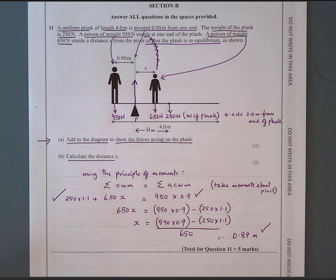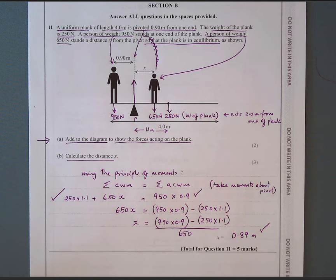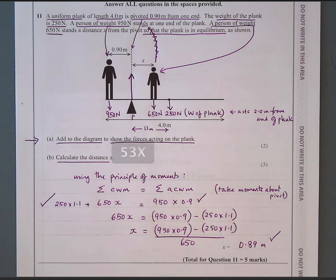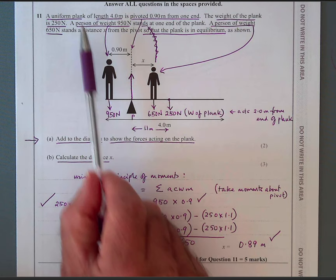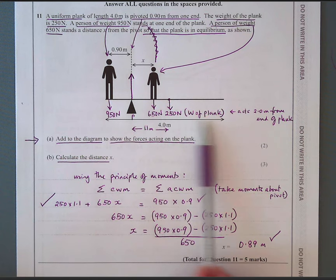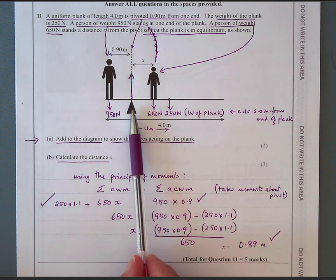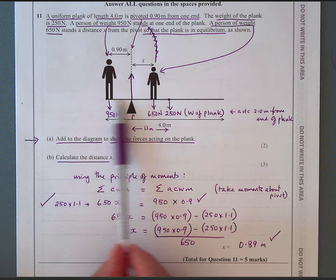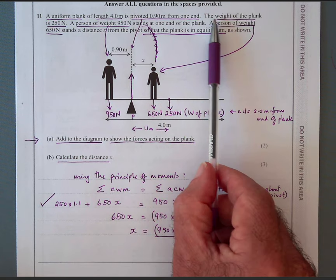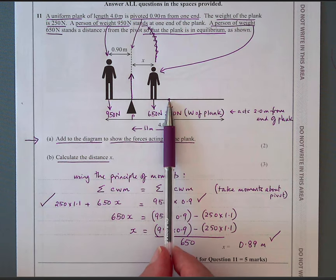The first question involves a uniform plank. The length is 4 meters, pivoted at 0.90 meters from one end where the larger person is standing. The weight of the plank is 250 Newtons, which I've drawn in. The 250 Newtons acts at 2 meters from the end, therefore 1.1 meters from the pivot.